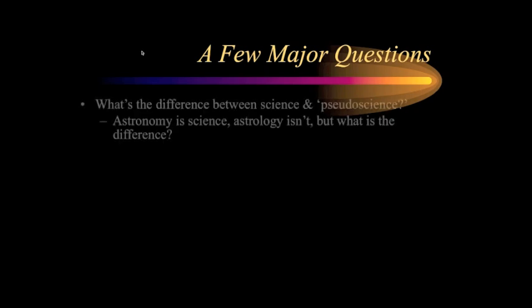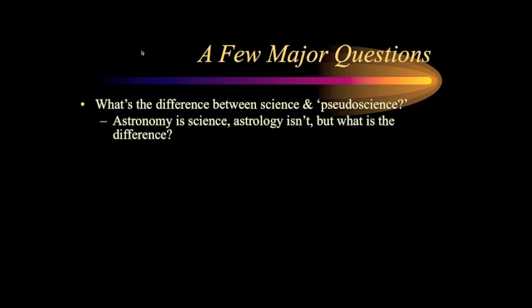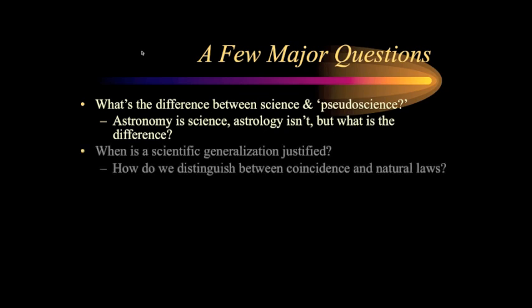What are some of the major questions I plan to look at? What is the difference precisely between science and pseudoscience? The standard example is that astronomy is clearly a science and astrology is clearly a pseudoscience — but exactly what is the difference? That's not as clear-cut an issue as it might seem. Another issue: when is a scientific generalization justified? How do we know how much data we need to make that leap from a data set to a natural law? How can we distinguish between coincidences and natural laws? At first glance that might seem obvious, but it's actually a lot more difficult than you might realize.